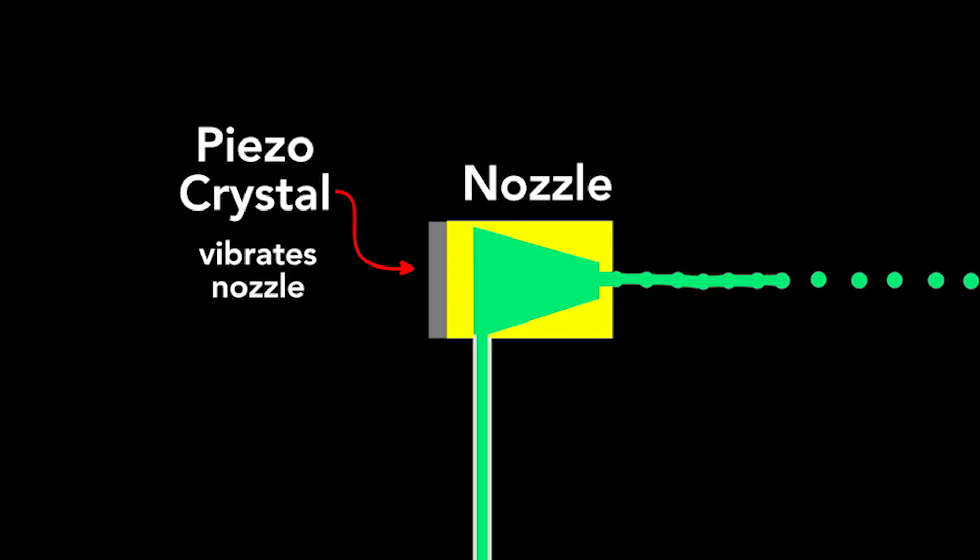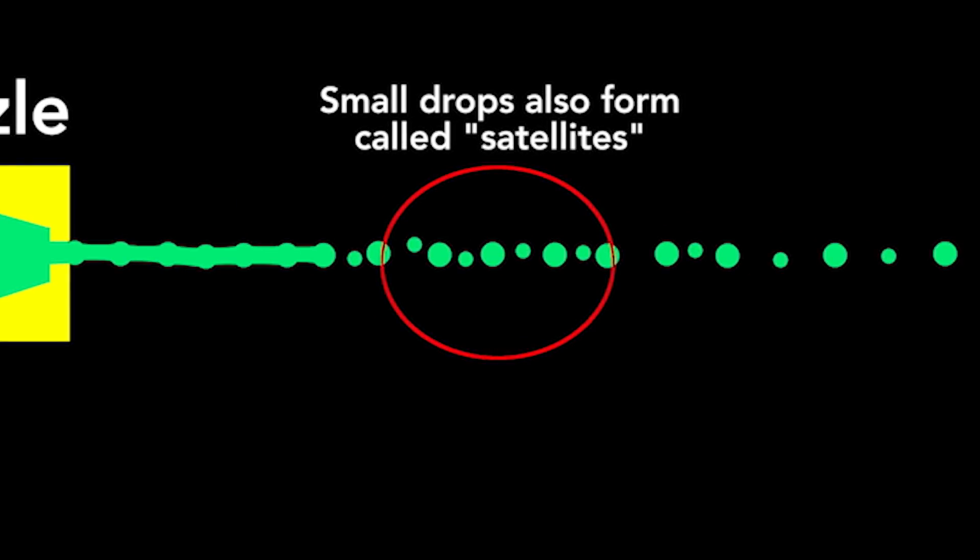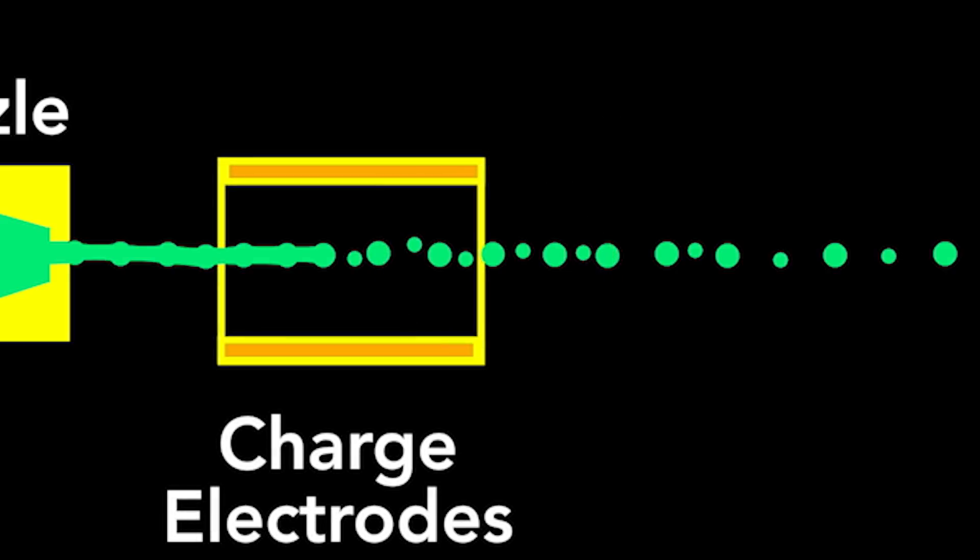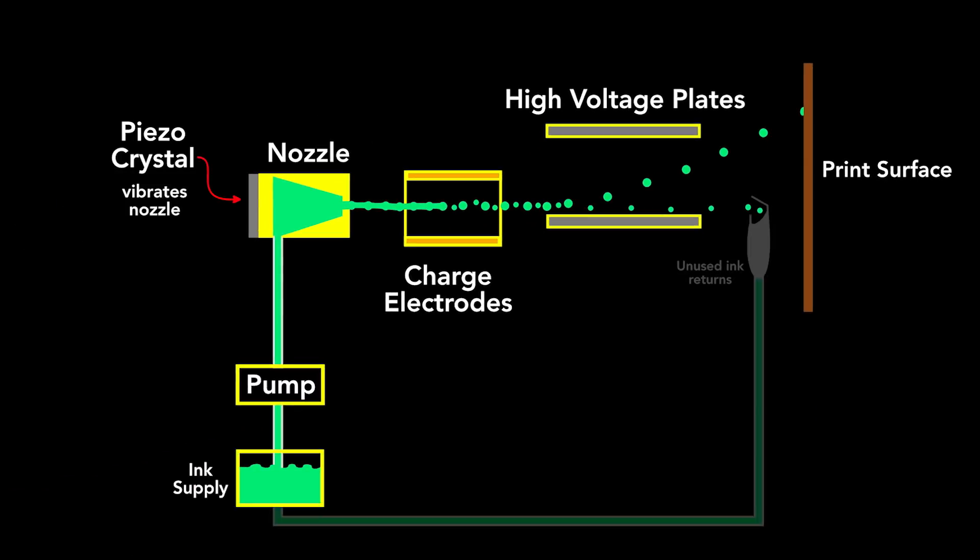I've shown the stream breaking into uniform droplets, but in practice, some small droplets called satellites also form. To select the right-sized droplets, the droplets are charged by electrodes and passed through high-voltage plates. The larger droplets are more highly charged, so deflect more than the smaller droplets. These satellites are collected and recycled into the ink supply.